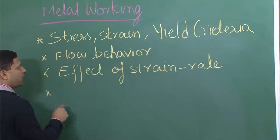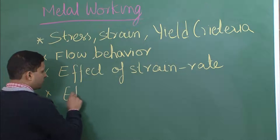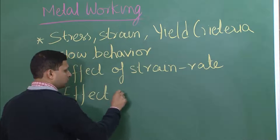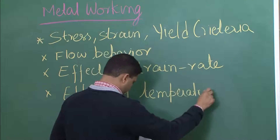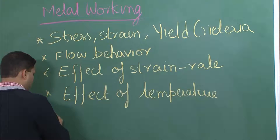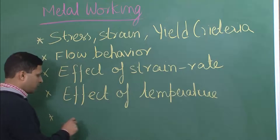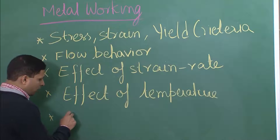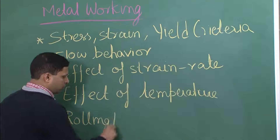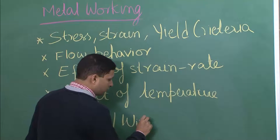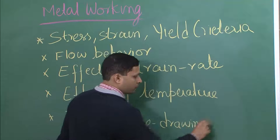Once we have the effect of strain rate, we will also understand the combined effect of strain and strain rate. Then we will understand the effect of temperature and the combined effect of all three. After that, we will go through some simple models to understand the mechanics, and through that we will cover processes like rolling, wire drawing, and extrusion.